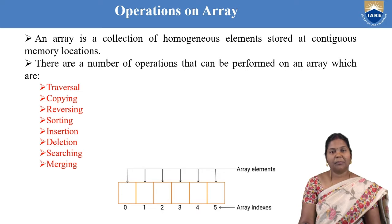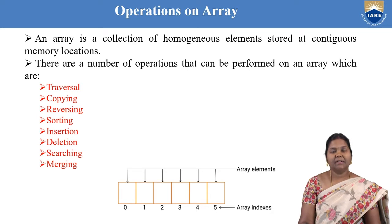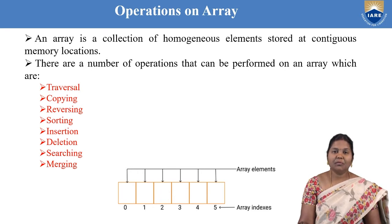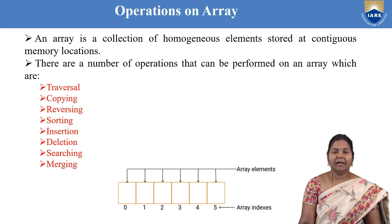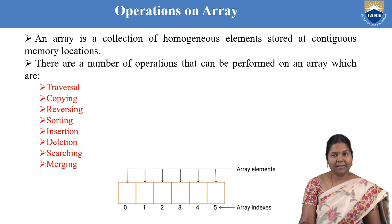Before going to array operations, what is an array? An array is a collection of homogeneous data elements. Whenever you want to store data of similar types, you have to use an array. If you want to store data elements of different types, then you have to use a structure in C language. The elements are arranged in an array in consecutive order — one after the other in consecutive memory locations.